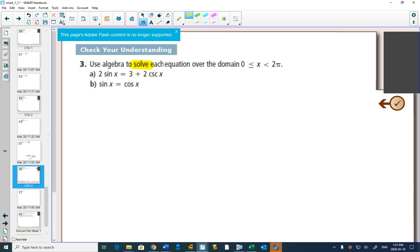In a proof question it's supposed to work for everything. So this question is saying solve not proof. Now the reason this is in chapter 7 is because on the left hand side we have a sine of x, on the right hand side we have a cosecant x.